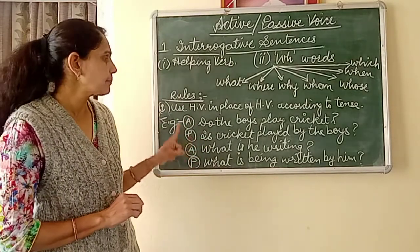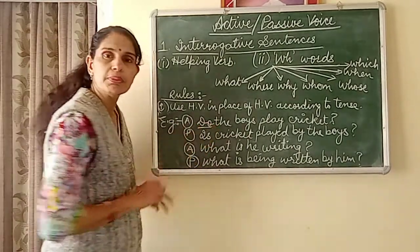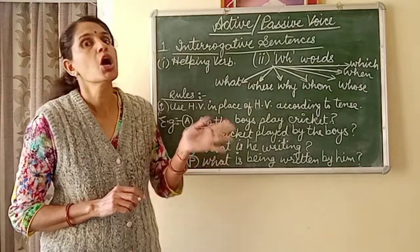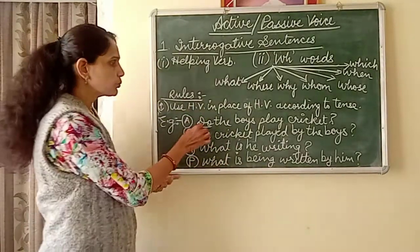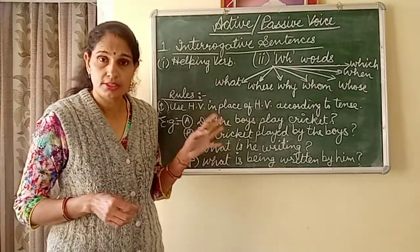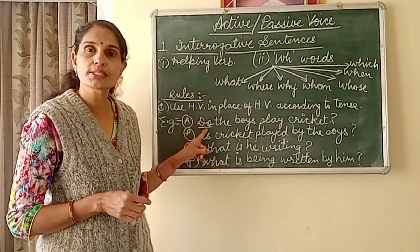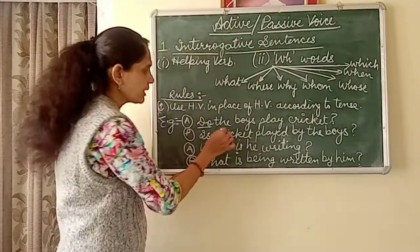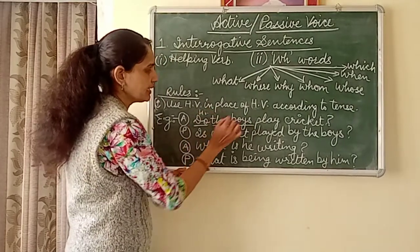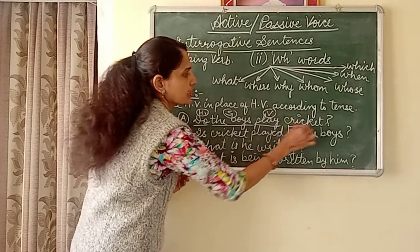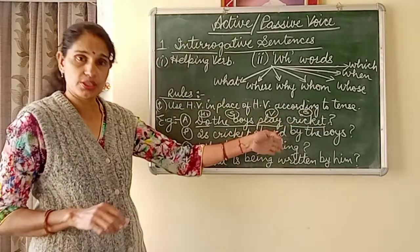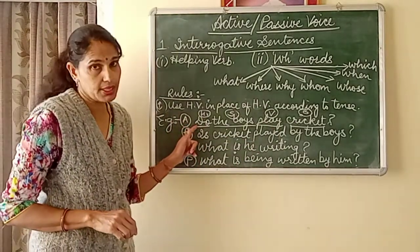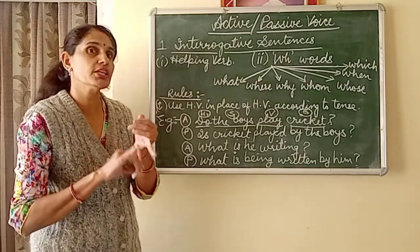The first example: 'Do the boys play cricket?' The helping word 'do' tells us this is present tense. 'Do' and 'does' are present tense helping words — 'do' for plural subject and 'does' for singular subject — and 'did' is the past tense helping word. So 'Do the boys play cricket?' — 'do' is the helping word, 'the boys' is the subject, and 'cricket' is the object.